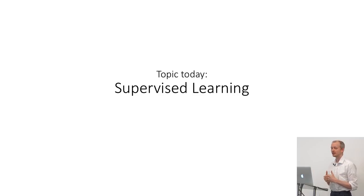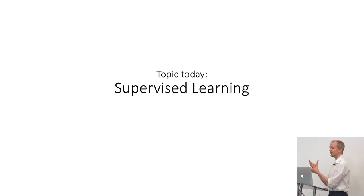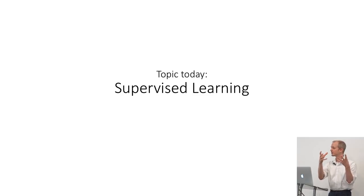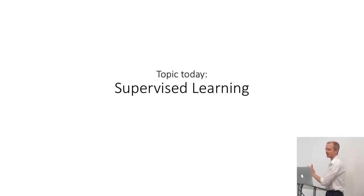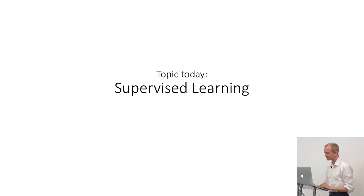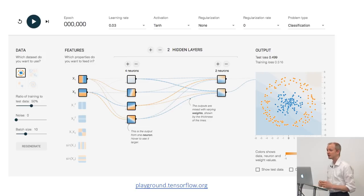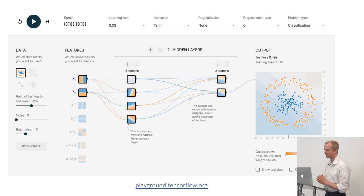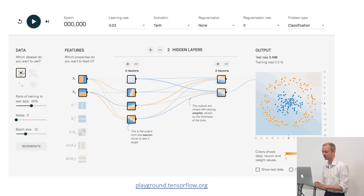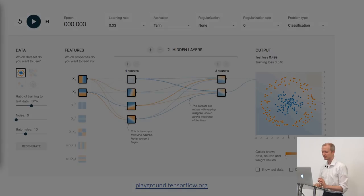The general idea is you need to have a lot of data, you need to have labels for that data saying this is the correct answer based on these variables, and if the variables are different the correct answer is this. There is a really beautiful visualization that maybe can help people get a sense of what's going on — if you've not seen this before, I really encourage you to play around with it on your own. I loaded this up — it's kind of an approximation of how things might work.